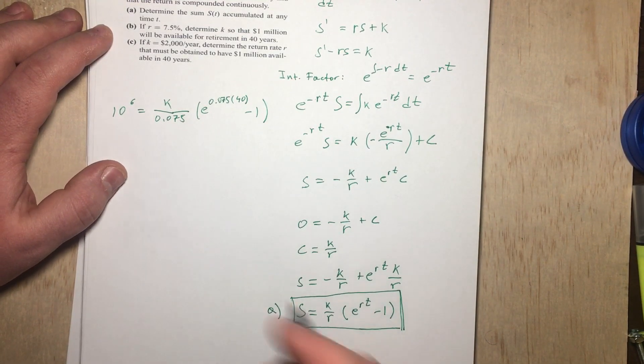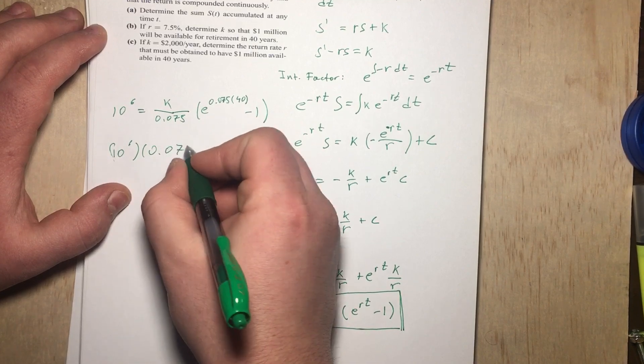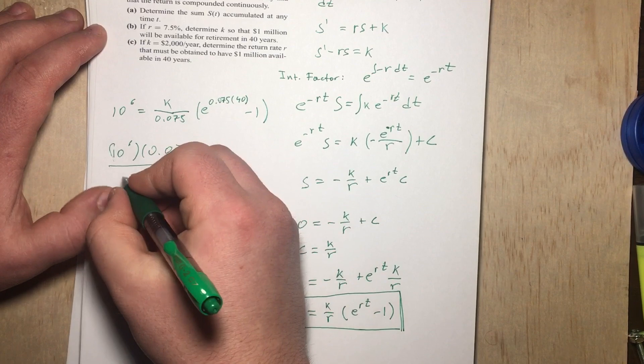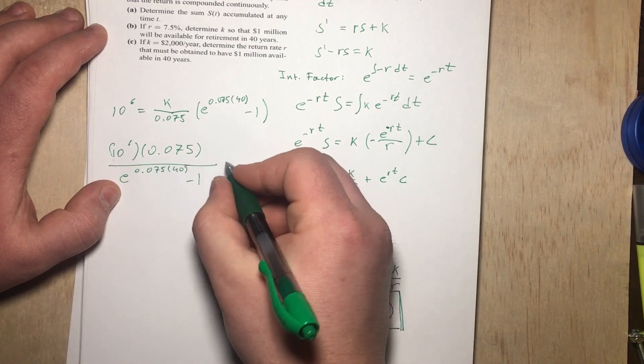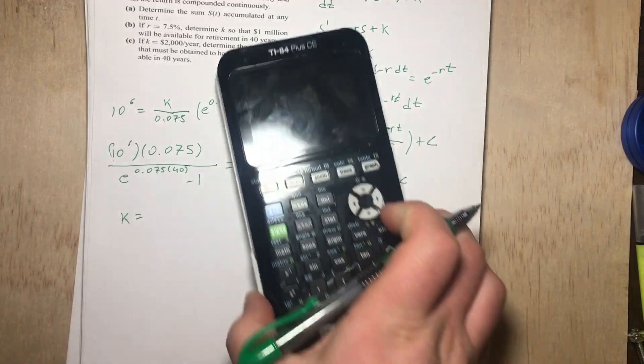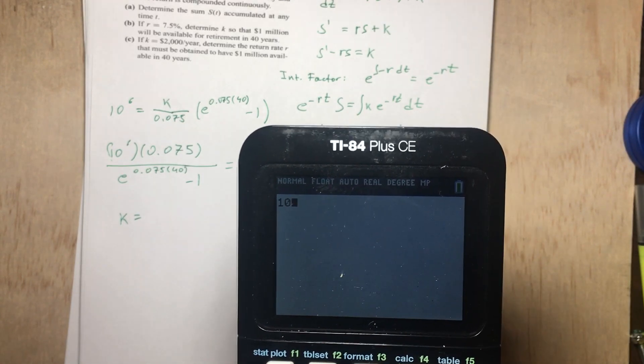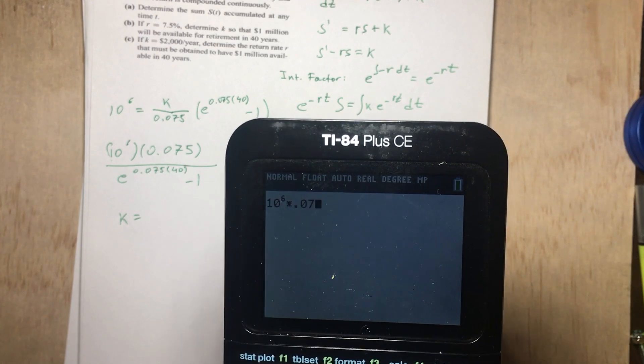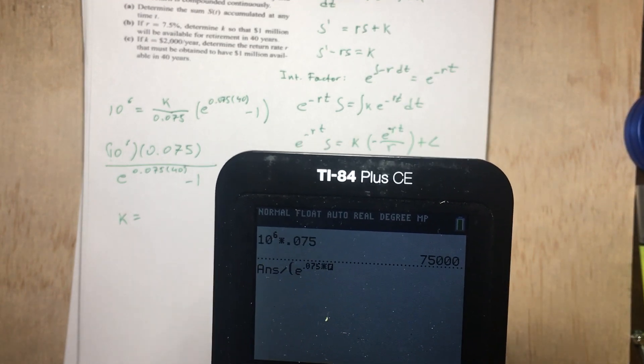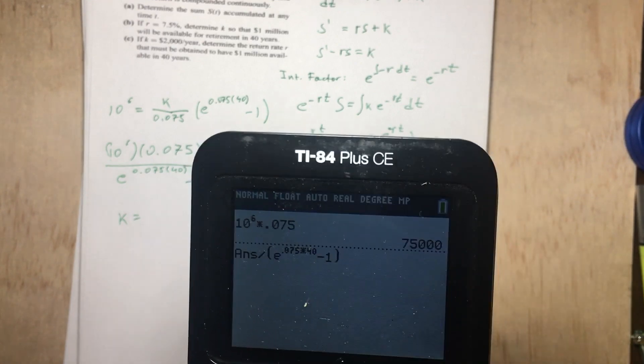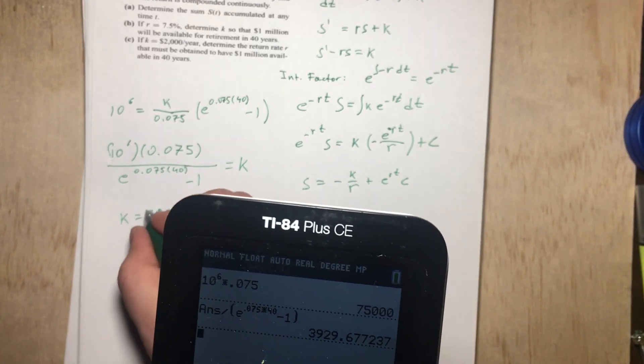So K is going to be equal. Let's go ahead and plug that into the calculator and see what we get. So we have 10^6 times 0.075, all divided by e^(0.075) times 40 minus 1, gives us K. So K is going to be equal. Let's go ahead and plug that into the calculator. So we're going to have 10^6 times 0.075, and we are going to divide that by e^(0.075) times 40 minus 1, and we get $3,929 per year.